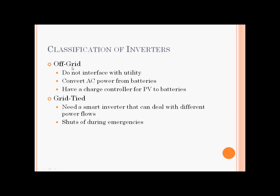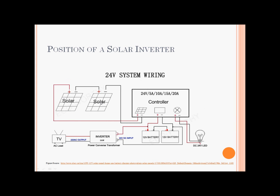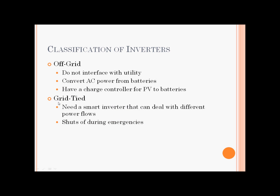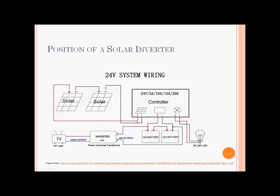Classification of inverters: there are two types, off-grid and grid-tied. In off-grid applications, they do not interface with the utility. They convert DC power from batteries to AC power. They have a charge controller for PV to batteries. In grid-tied applications, they need a smart inverter that can deal with different power flows and shuts off during emergencies — which is called Anti-Islanding Protection.